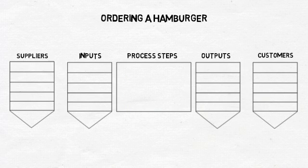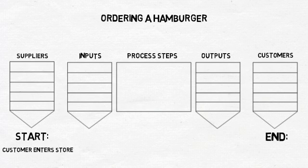The lists do not need to line up. In other words, you can have 6 items under Outputs and only 4 items under Inputs. To begin, capture the name of the process: ordering a hamburger. Next, identify the starting and ending points of the process. Once your team has agreed on process boundaries, you can begin filling out the SIPOC chart.